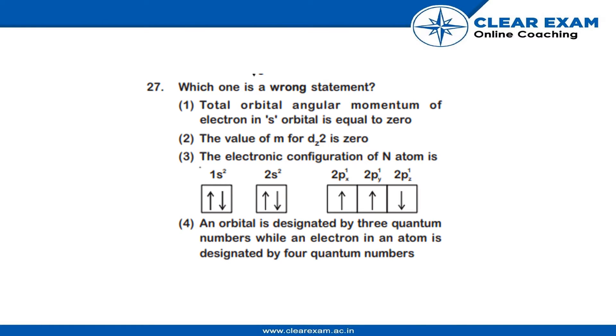Which one is a wrong statement? First, total orbital angular momentum of electron in s orbital is zero. This statement is correct, as the angular orbital momentum in s orbital is always equal to zero. Second, the value of m for dz2 is zero.